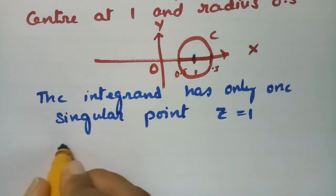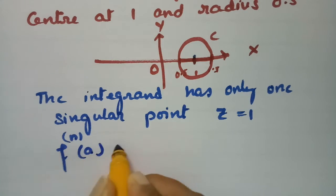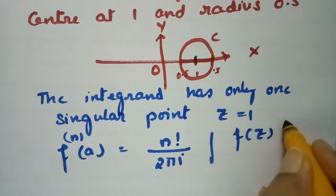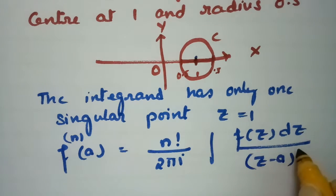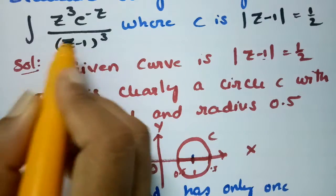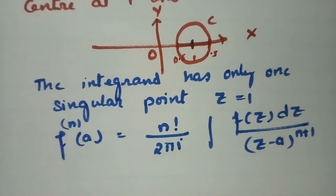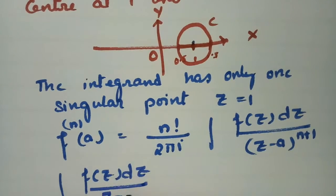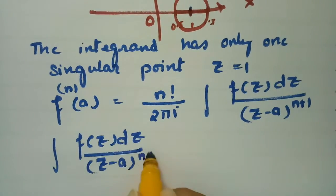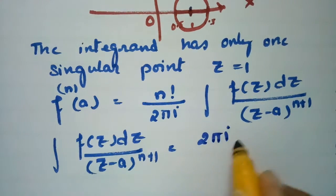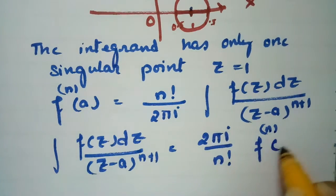According to Cauchy's integral formula, the nth derivative of f at a equals n factorial divided by 2πi, times the integral of f(z) dz over (z minus a)^(n+1). We need to calculate this integral, so rearranging, the integral of f(z) dz over (z minus a)^(n+1) equals 2πi divided by n factorial times the nth derivative of f at a.